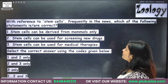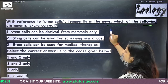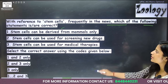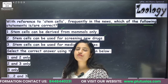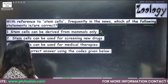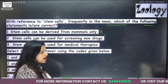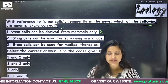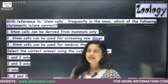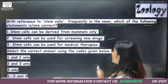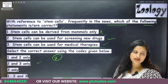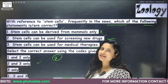From PYQ 2012: 'Stem cells can be derived from mammals only' — incorrect, because stem cells can also be derived from plants. 'Stem cells can be used for screening new drugs' — correct, for example using cultured lung tissue to test drug efficacy. 'Stem cells can be used for medical therapies' — also correct. So the second and third statements are correct. That's it for today's session. Hope you liked it. Thank you so much.